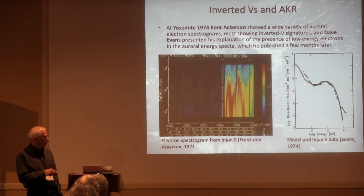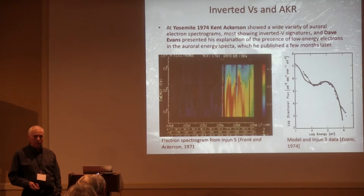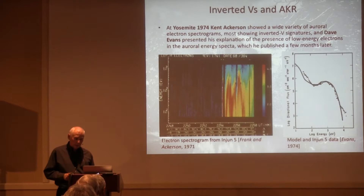He did it all on his own. Here's his model — solid line. He said, there's a parallel electric field above; there are secondary electrons coming from the auroral precipitation from below; and the secondaries get trapped between the magnetic mirror and the potential drop. And that's what these low-energy electrons are. This was first announced in 1974 and published in July of 1974.